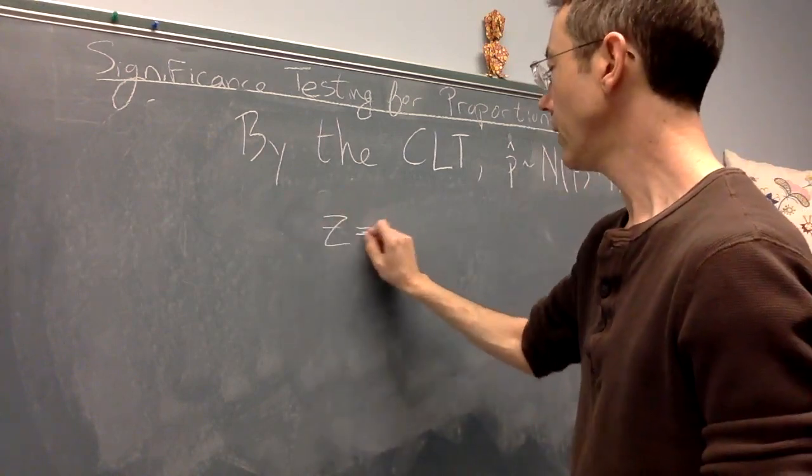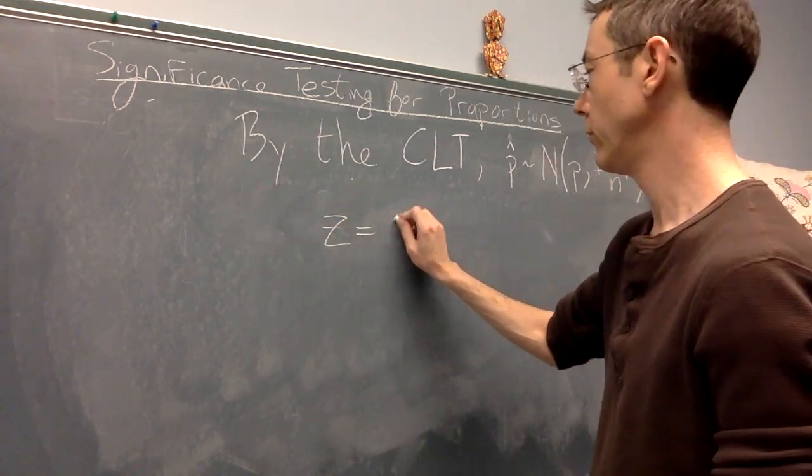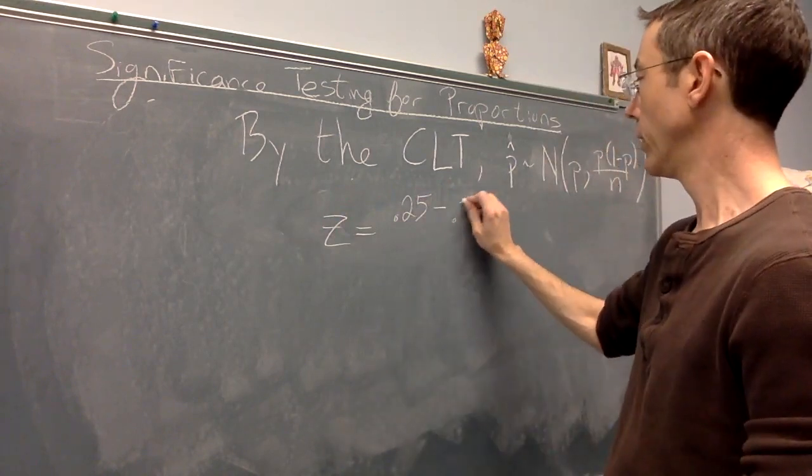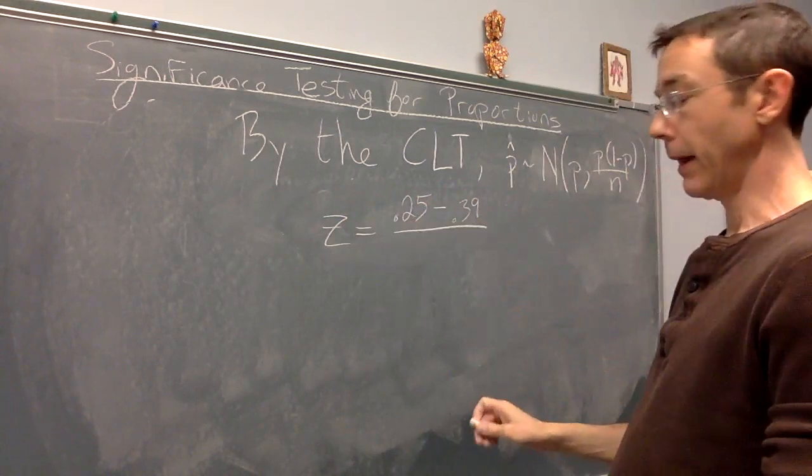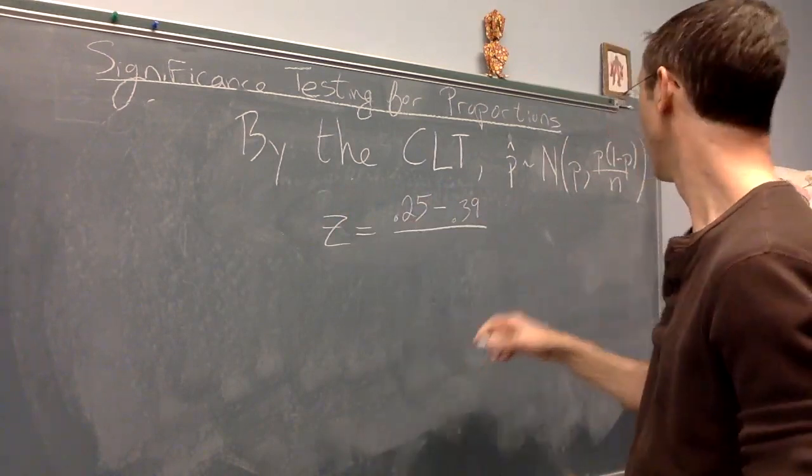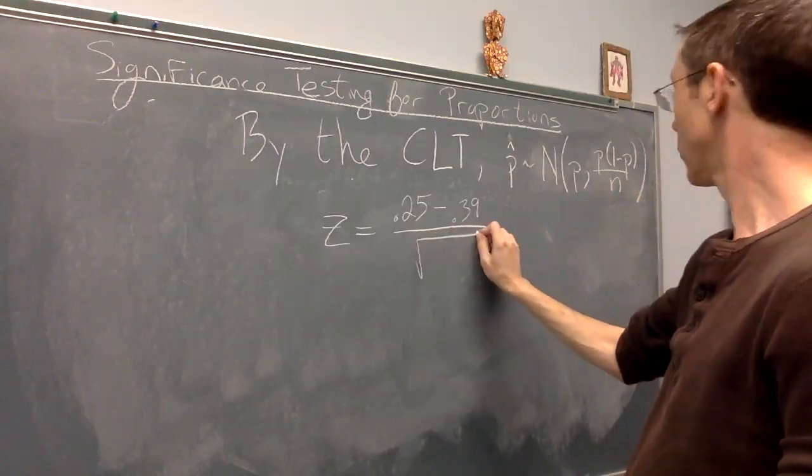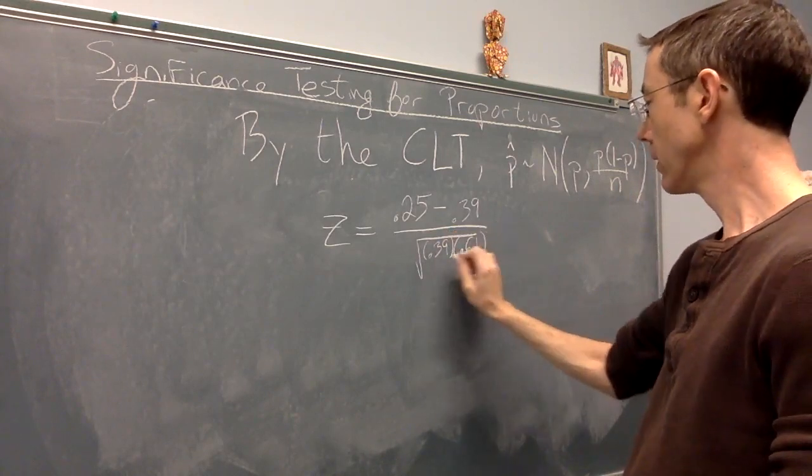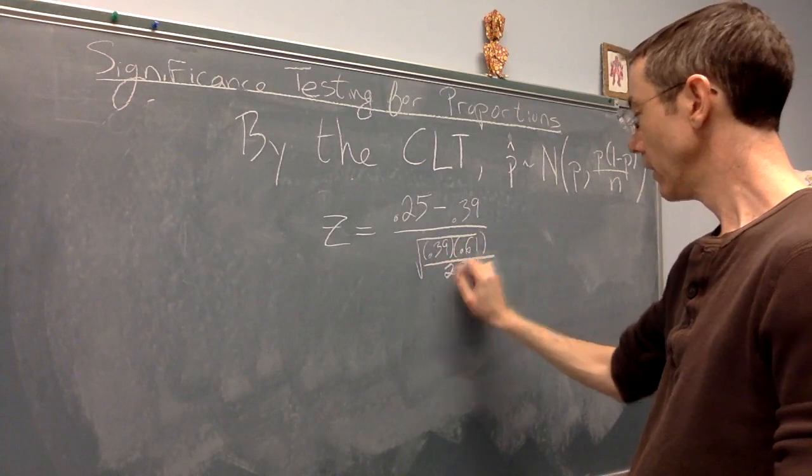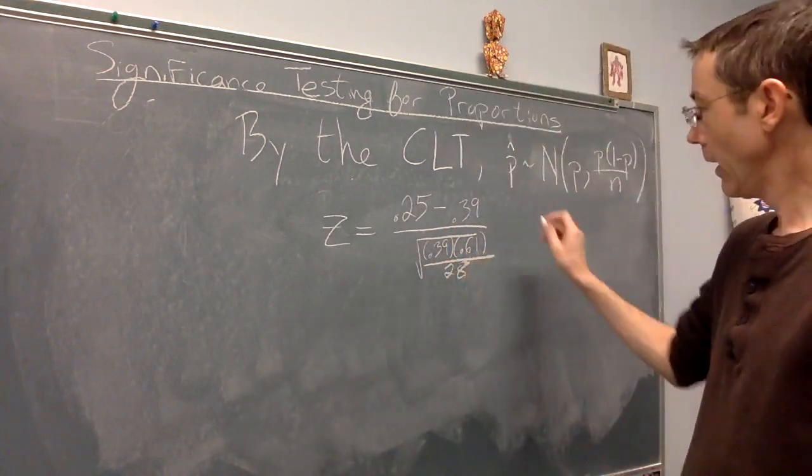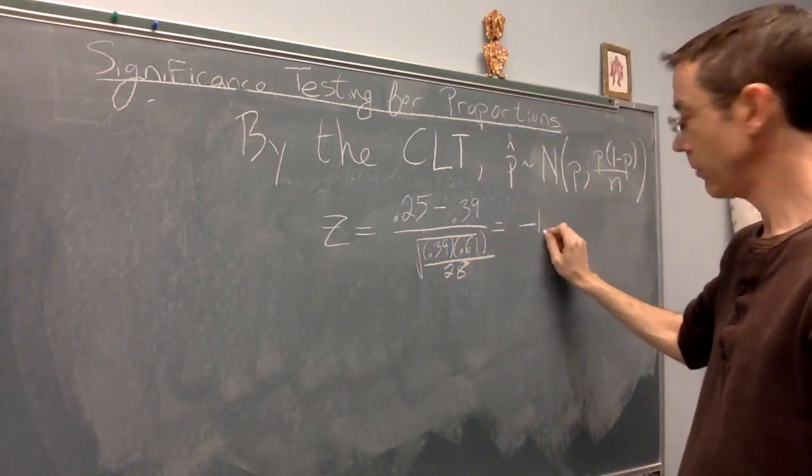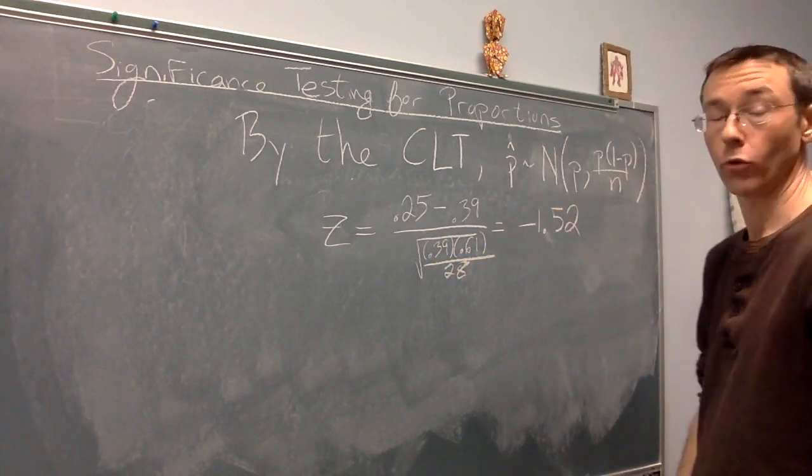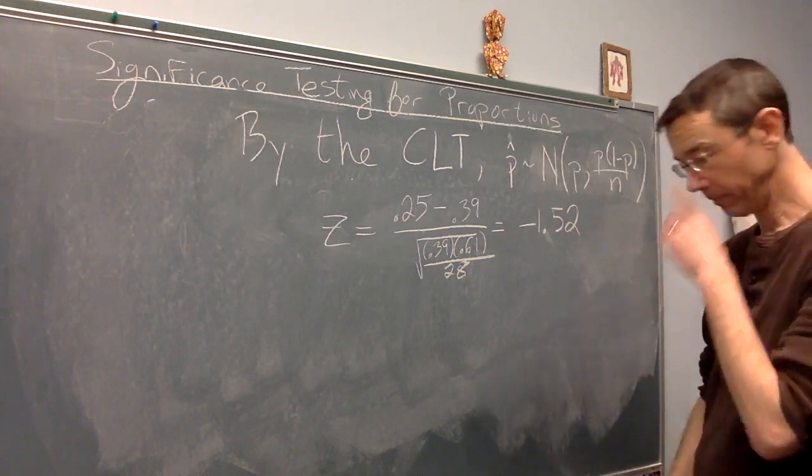So in this case, we have z is the proportion we got, 0.25, minus the proportion that we expected, 0.39, divided by the standard deviation of p hat, which we know is the square root of this thing. Square root of 0.39 times 0.61 over the sample size of 28. And when we compute that, we get negative 1.52. And we know from long experience with the normal distribution, that's not a huge z-score.